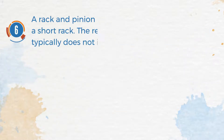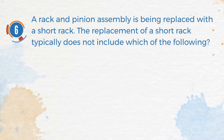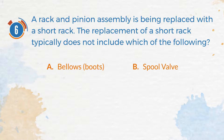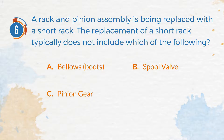Number 6. A rack and pinion assembly is being replaced with a short rack. The replacement of a short rack typically does not include which of the following? A. Bellows boots. B. Spool valve. C. Pinion gear. D. Rack gear.